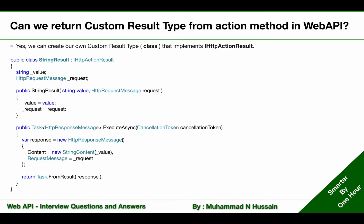If you see in this example, I have just created a class StringResult, and that class is implementing the IHttpActionResult interface. The IHttpActionResult interface contains a declaration of the ExecuteAsync method, and I am implementing that method in this class.